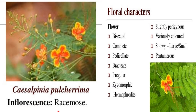Inflorescence: it is usually racemose, especially in Caesalpinia pulcherrima. Floral characters: bisexual, complete, pedicellate, bracteate, irregular — that is why it is zygomorphic. Hermaphrodite, slightly perigynous, variously colored, and showy. Flowers could be large or small.